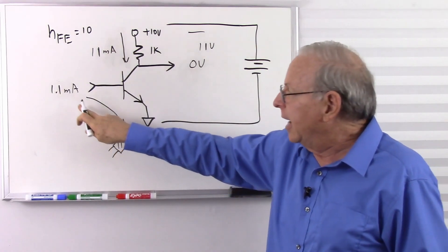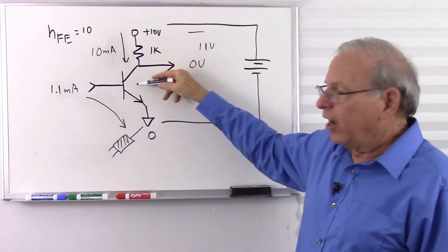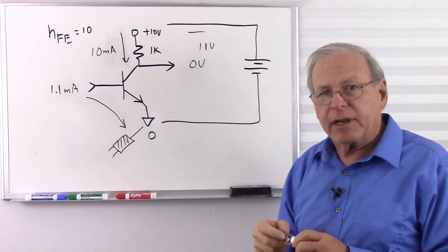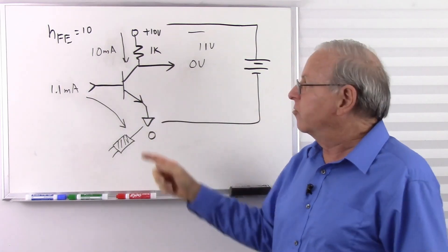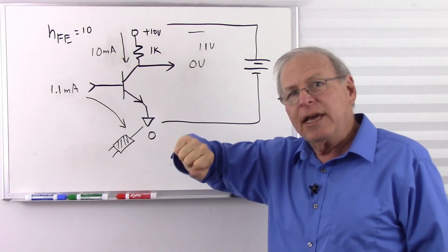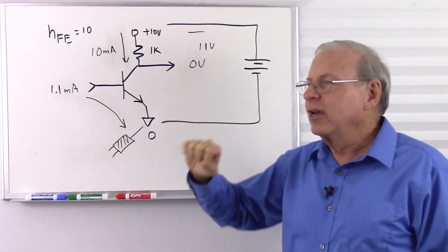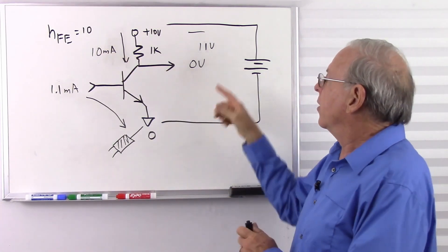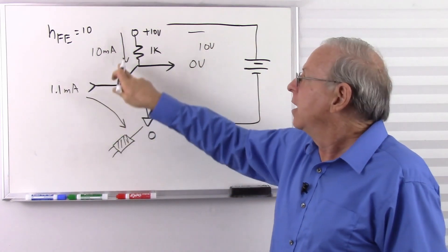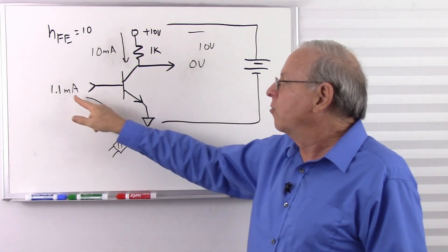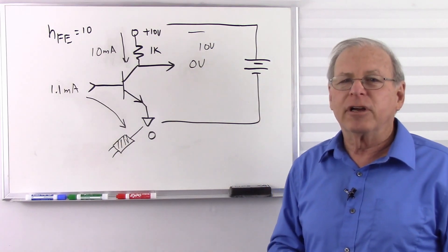I increased my base current, I increased the input, but nothing changes. The transistor is trying to pull 11 milliamps through there. Using the little green man model of the transistor — a little green man controlling the resistance — his instructions are to make the collector current 10 times the base current. He's dropped the resistance all the way to nothing, but he can't get more than 10 milliamps. He says, 'I'm giving it all I have.' So increasing the base current can no longer increase the collector current.